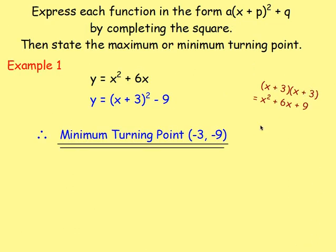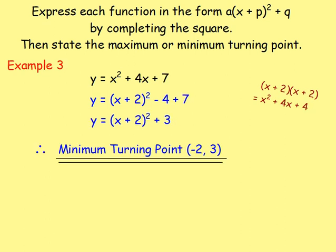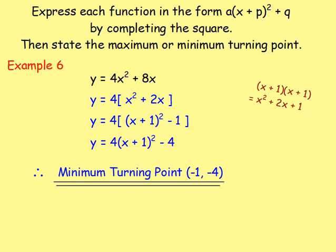After that, we moved on to looking at maximum and minimum turning points. For each of these, we had to express the function in the form a(x + p)² + q by completing the square. Remember: halve the coefficient of x, subtract the correction number. The turning point is found by changing the sign of the number in the bracket and keeping the constant as it is. So for one example, you'd get (-3, -9).